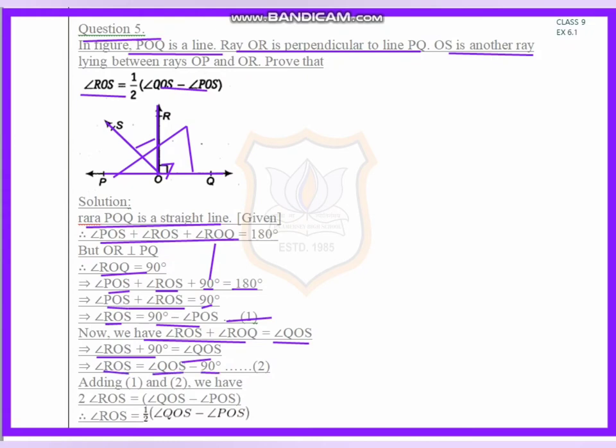By adding equation 1 and equation 2, we get 2 times angle ROS equals angle QOS minus angle POS. So angle ROS, this 2 in multiplication on another side becomes division, so one-half times angle QOS minus angle POS.